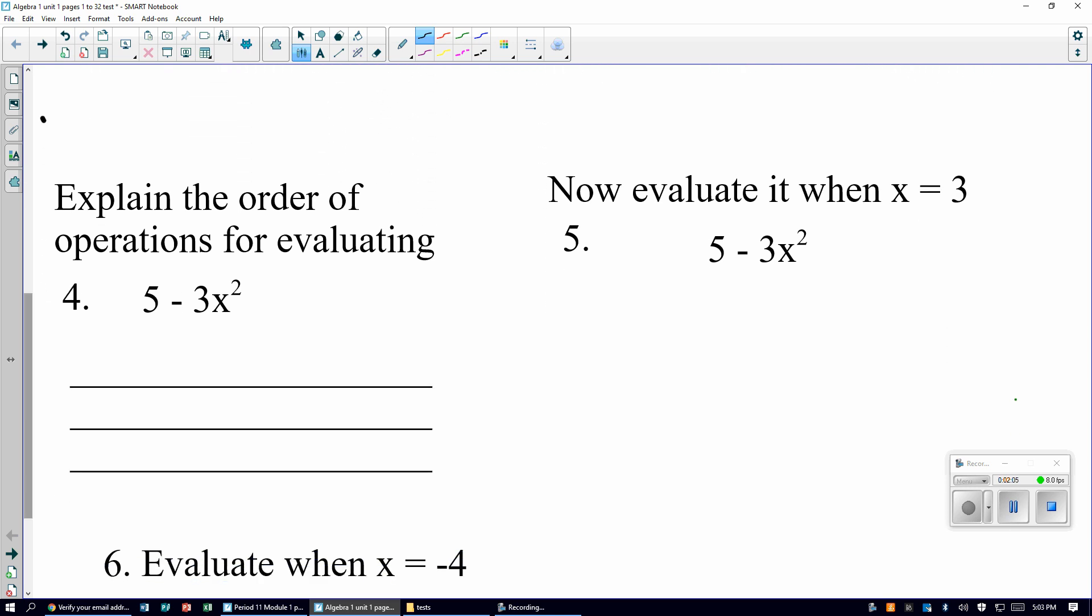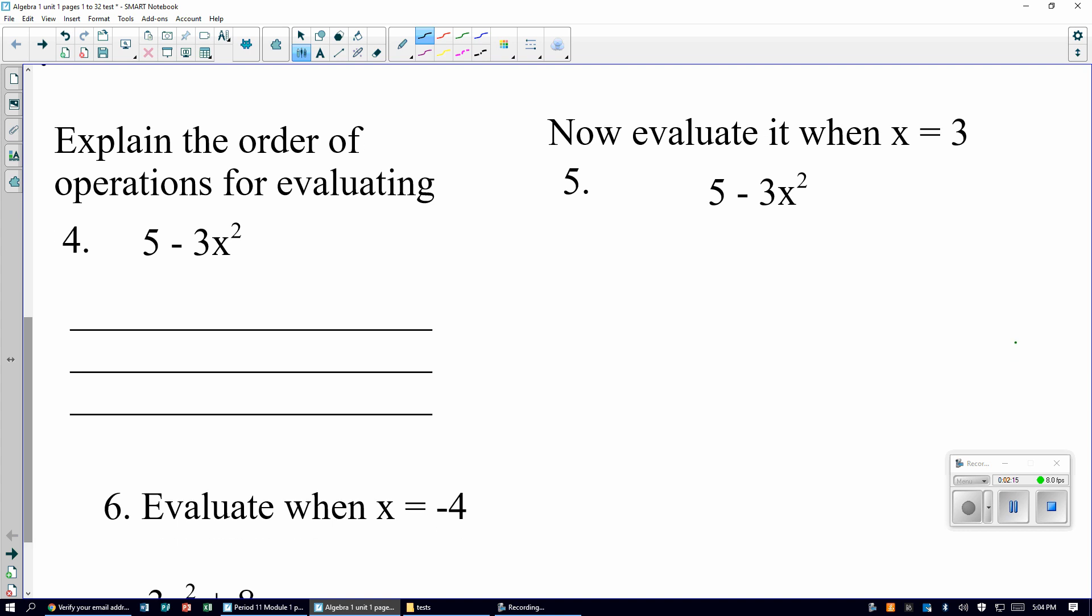I'm going to go through this fast. Remember, this is a review. Explain the order of operations for evaluating this, 5 minus 3x squared. What do you do first? Explain, write in words, the order. There are no parentheses. So you do the exponent, then you do 3 times, or you can just write times, then you do 5 minus the answer.